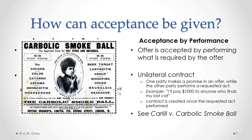The classic case of a unilateral contract is called Carlyle versus Carbolic Smokeball. You can read about that case in the textbook materials.